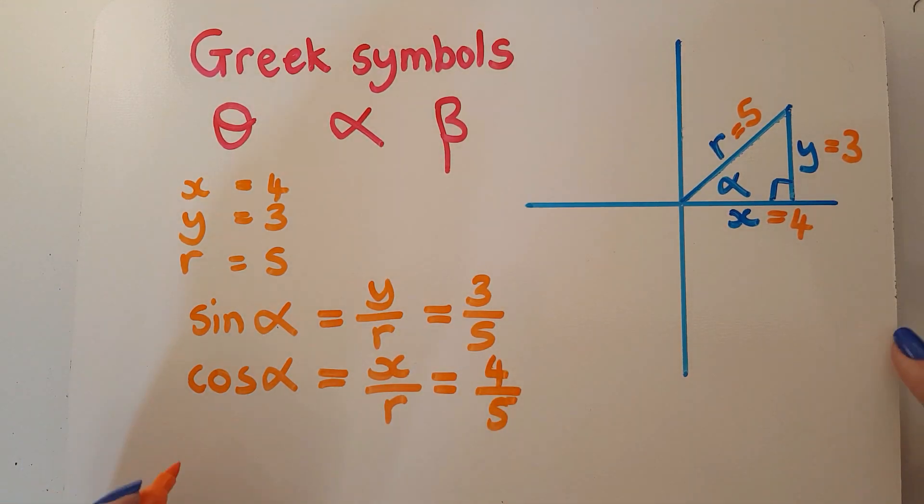In the same way, we're going to have the tan function of the angle. The tan function is the y over x. So that is going to be 3 over 4, giving us tan α = 3/4.